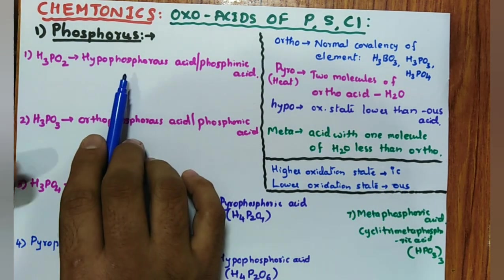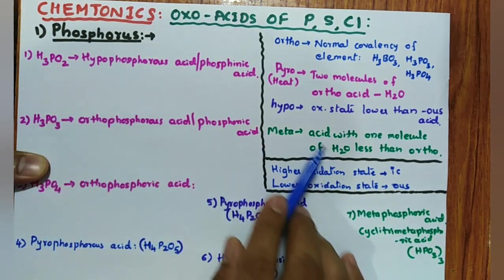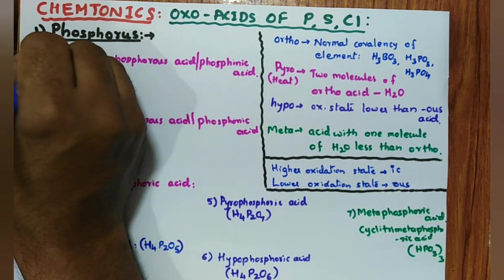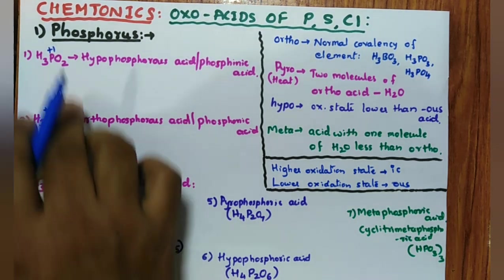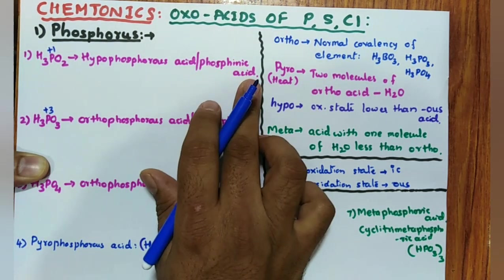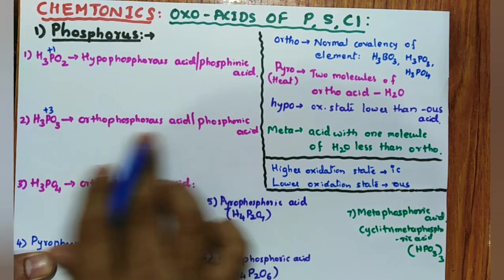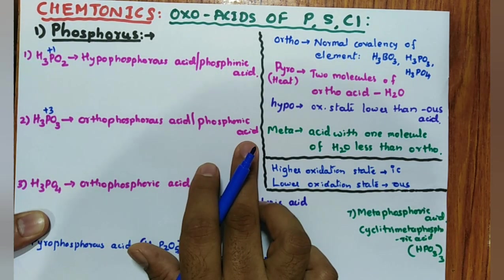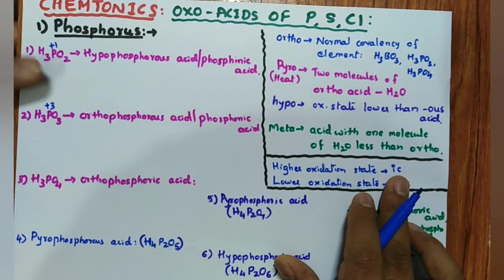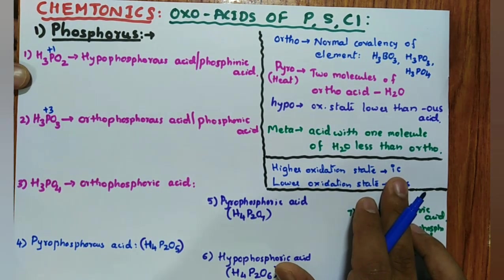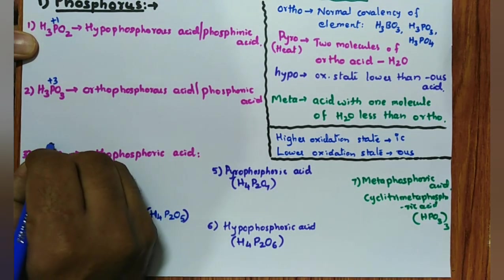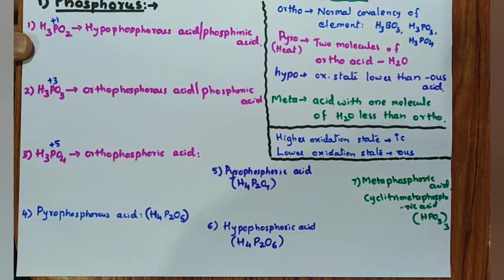Hypophosphorous acid: hypo because its oxidation state is lower than the S-acid — this is +1 and the S-acid is +3, so +1 is lower. Hypophosphorous acid is also called phosphenic acid. Orthophosphorous acid has normal covalency +3, also called phosphonic acid — it is the S-acid because it is one oxidation state less than the IC. One oxygen difference means two oxidation states. So orthophosphoric acid is +5. These three are the basic acids in this case.